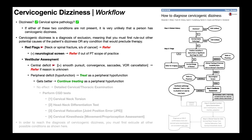You can then proceed to the vestibular assessment, where you perform a vestibulo-ocular motor screen. The first part screens for central deficits or signs of a central disorder. Tests that might be helpful include a positive smooth pursuit test, convergence tests, saccade tests, and VOR cancellation tests. When any of these are positive, it rules up the likelihood of a central deficit, which in some cases may require a referral if the reason is unknown.